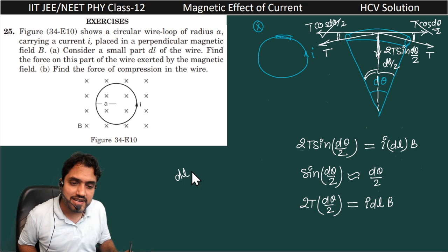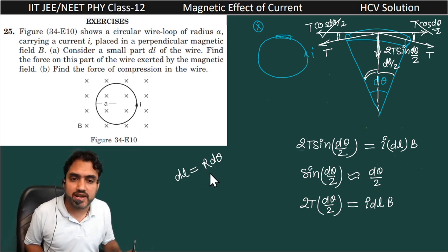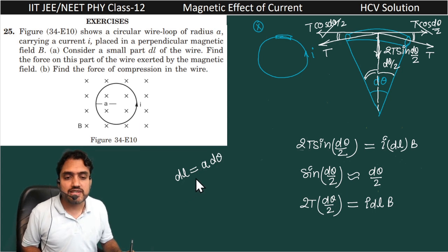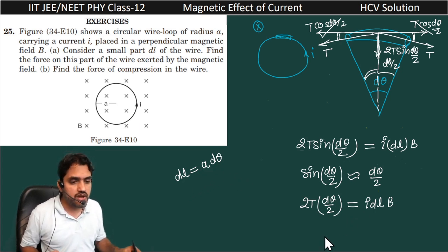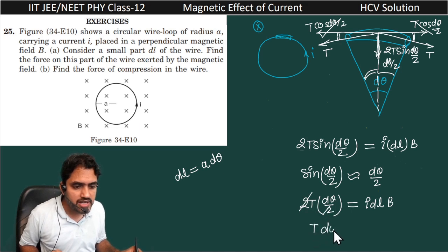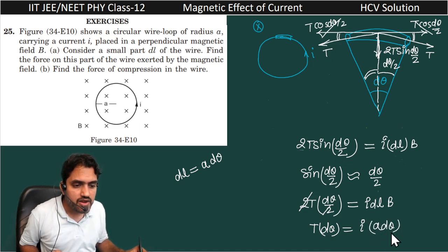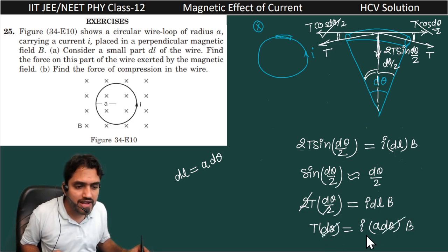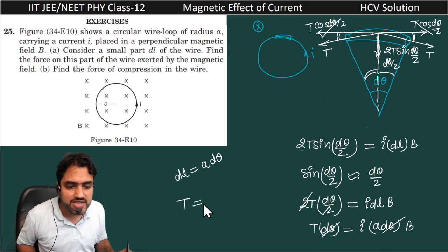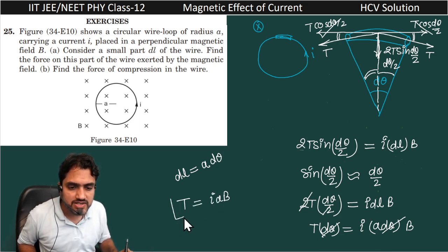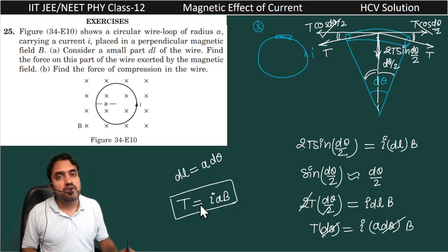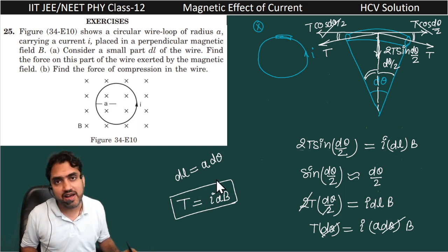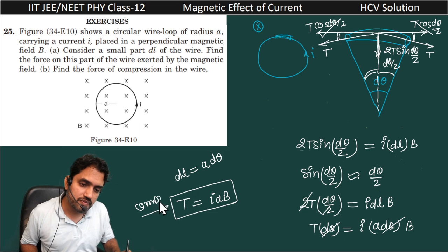Now dl, which is the arc length, equals radius multiplied by angle. In this case the radius is given as a, so dl can be written as a·dθ. Replacing dl, we get T·dθ = i·(a·dθ)·B. The dθ terms cancel out on both sides, giving us tension T = iaB. This tension T = iaB is the compression force in the wire.